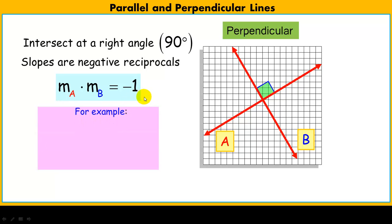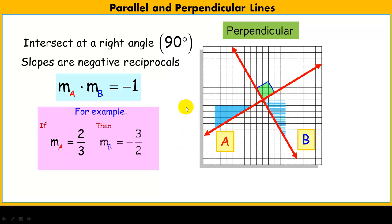For example, if line A has a slope of 2/3, and the lines are perpendicular, the slope of line B must be negative 3/2.